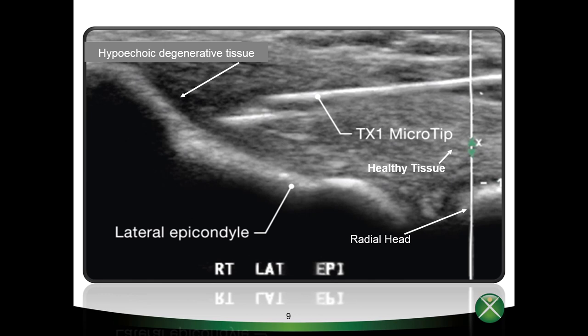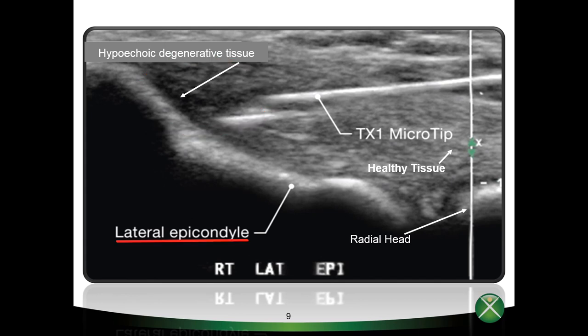Looking at the image on screen: on the right you can see the shape of the TX needle, which appears hyperechoic or white — remember, hyperechoic means that the ultrasonic waves do not transmit through a dense object such as bone or metal. The healthy tendon tissue is grayish in appearance. The hypoechoic or dark area noted at the tip of the needle is the diseased tendon that will be removed. You can also see the bone of the lateral epicondyle and the radial head, which are hyperechoic and appear white.